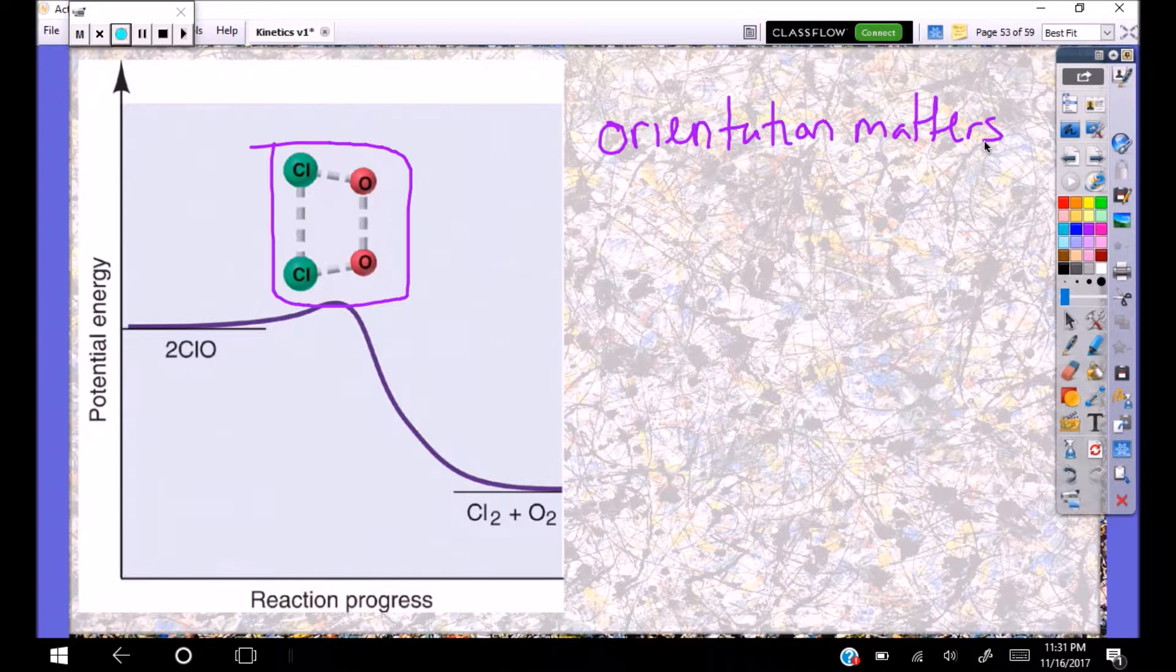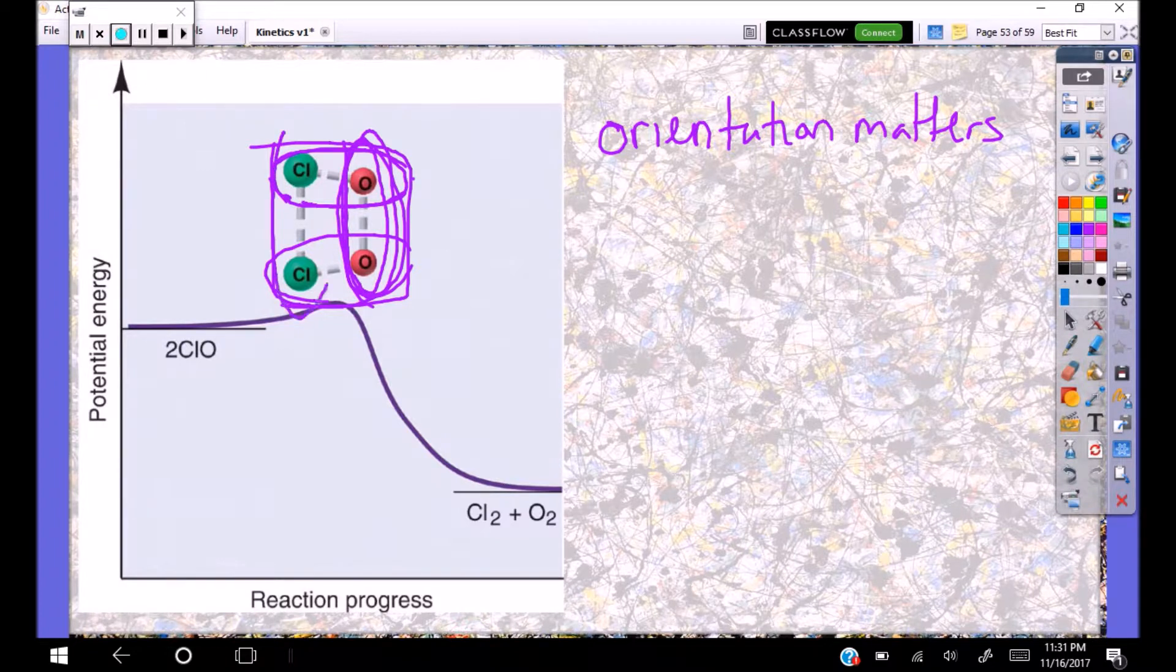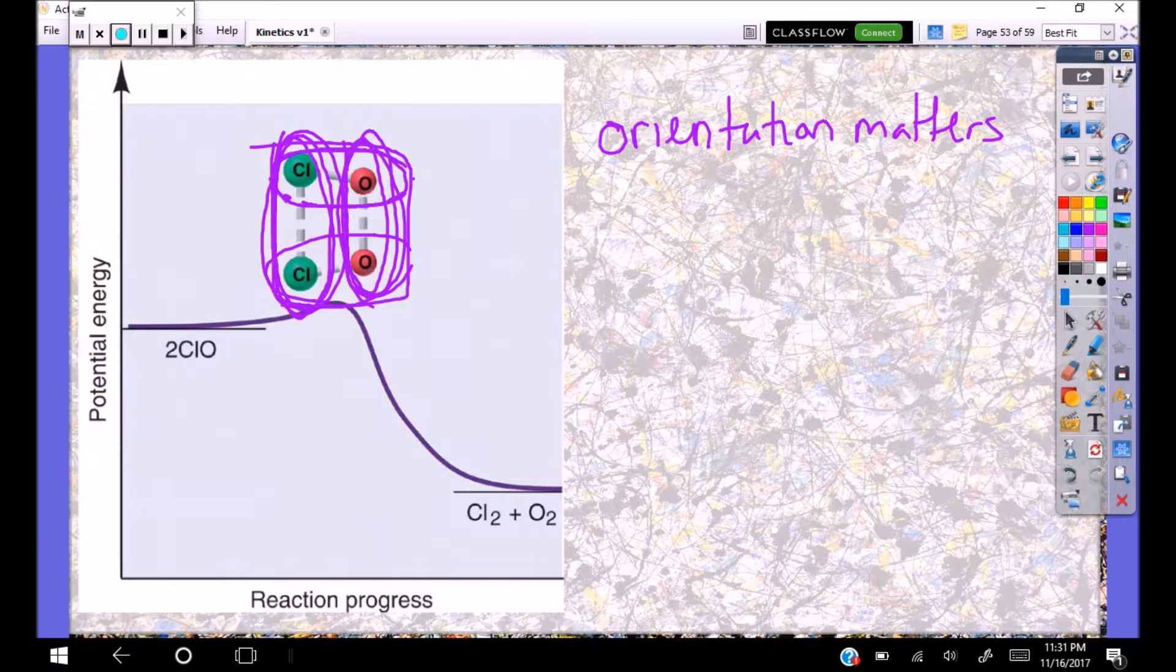So what that means is that here we have our two reactants, and I'm going to put a circle around them. ClO is the reactant. We have two ClO molecules. For them to form Cl2, like chlorine gas, and O2, they have to hit each other in this fashion so that the oxygen and the chlorine line up with each other in this fashion so that the oxygen and the chlorines line up with each other.